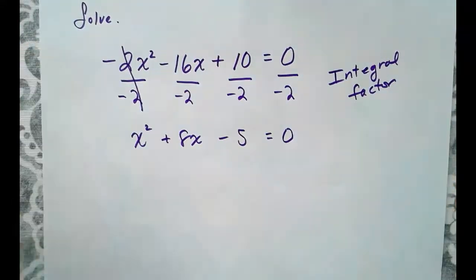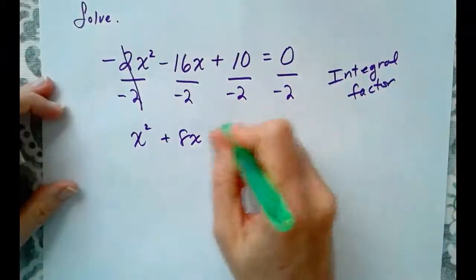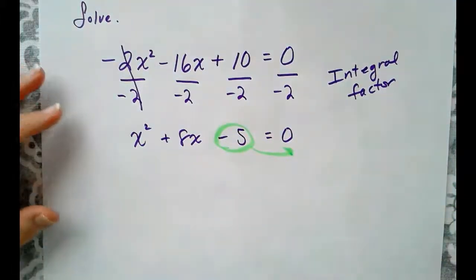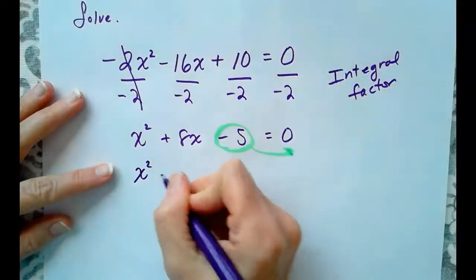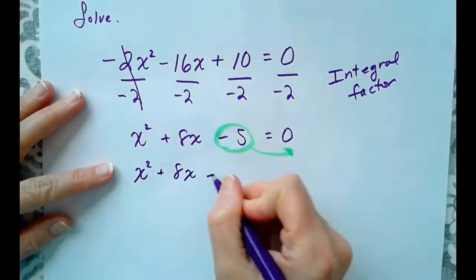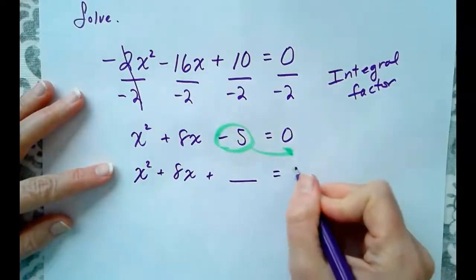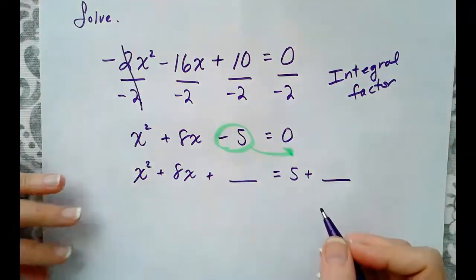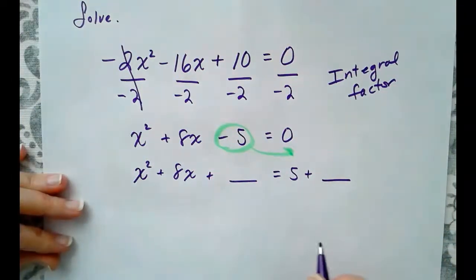So, we're going to go through the process again. First thing, take the constant, move it from the left to the right, and leave a blank. So, x² + 8x plus a blank equals 5 plus that same blank. Next, we will complete the square.